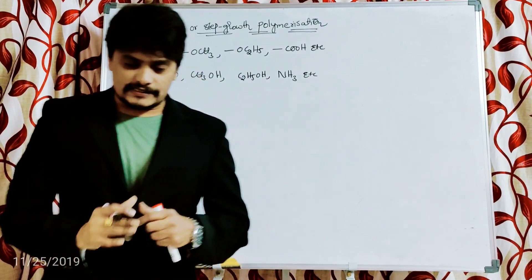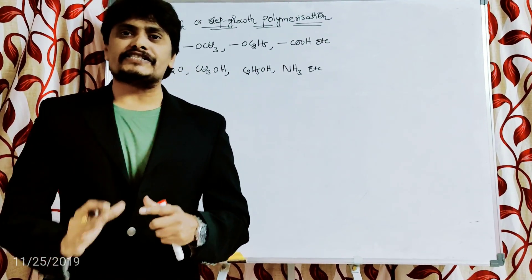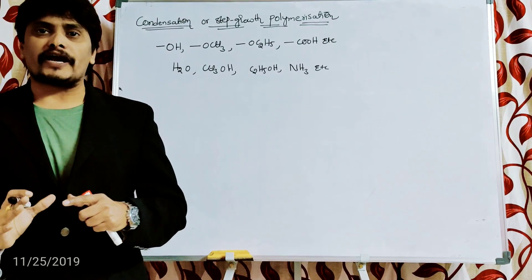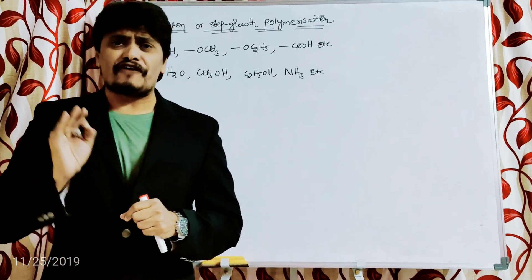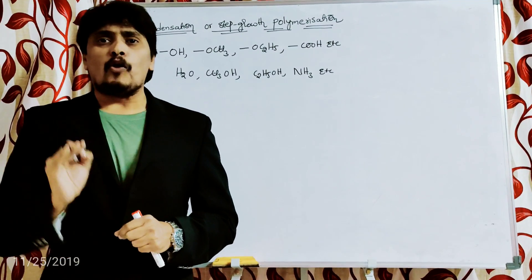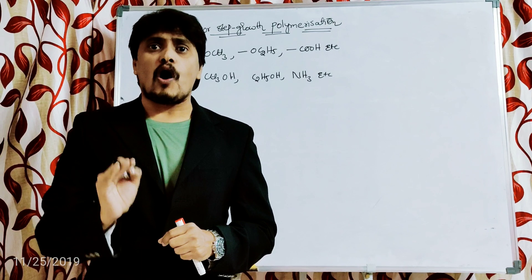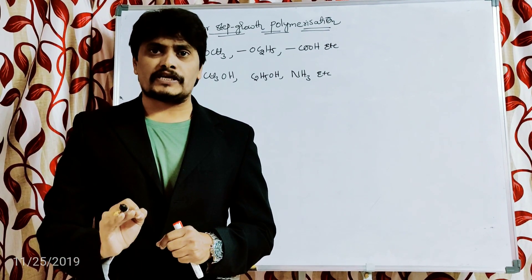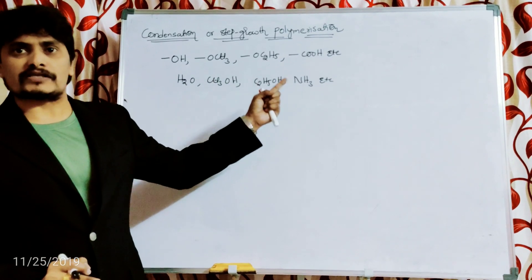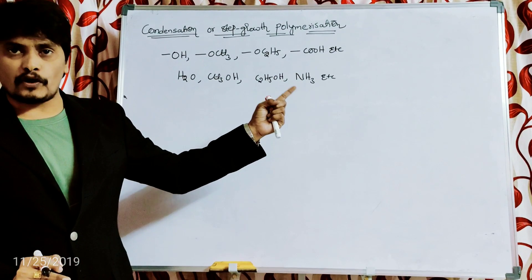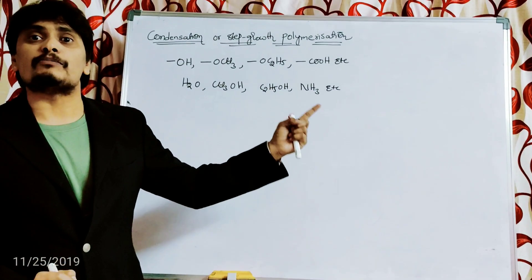Now let us discuss the critical points associated with condensation or step growth polymerization. Based upon the definition, it is very clear that monomeric units containing functional groups or polar groups such as hydroxy, methoxy, ethoxy, and carboxyl group undergo condensation or step growth polymerization.